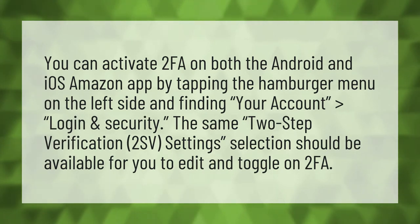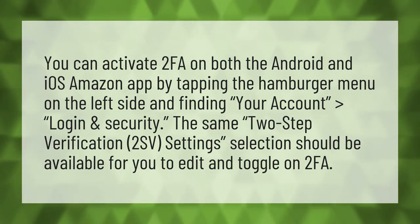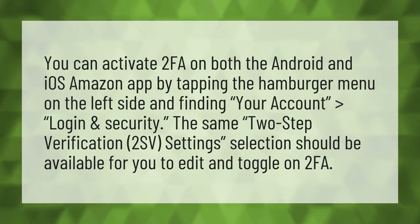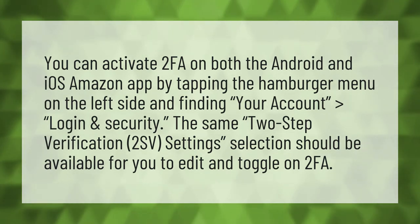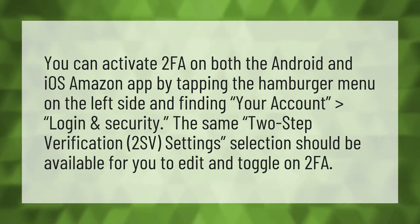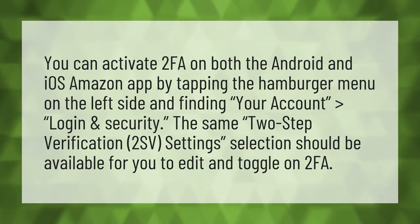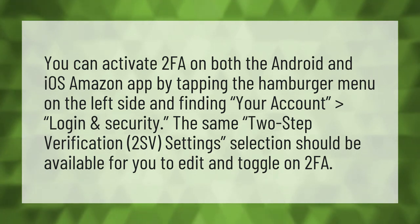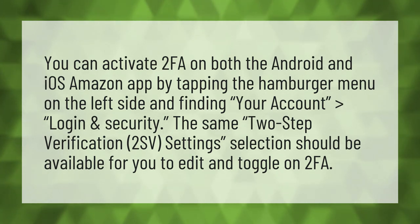You can activate 2FA on both the Android and iOS Amazon app by tapping the hamburger menu on the left side and finding your account, then Login and Security. The same two-step verification (2SV) settings selection should be available for you to edit and toggle on 2FA.